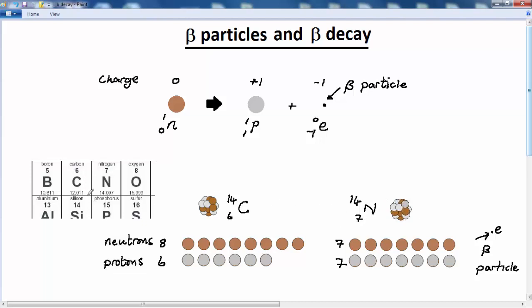In other words, whenever beta decay occurs, we move up one in the periodic table. We're going from carbon to nitrogen in this case as a result of beta decay. In the next lesson we'll have a look at what happens in alpha emission.